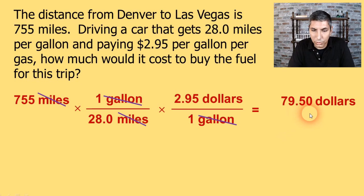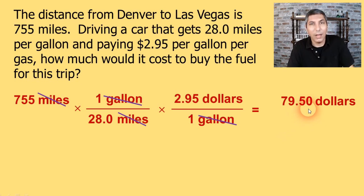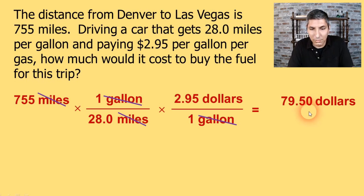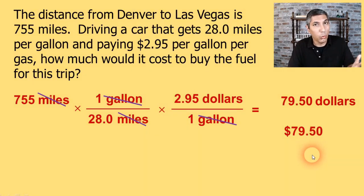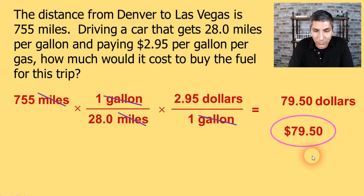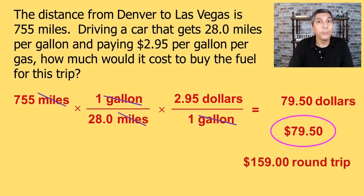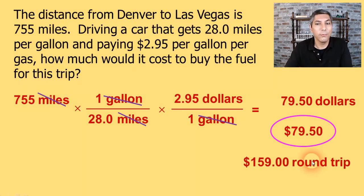We probably ought to use two significant figures, but since currency is in dollars and cents we'll go ahead with $79.50. Now you might want to have enough fuel to get back — a round trip would be twice that amount. So to take the round trip, we multiply by two and get an answer of $159 for the round trip fuel.